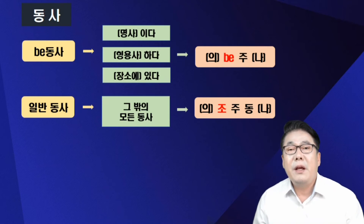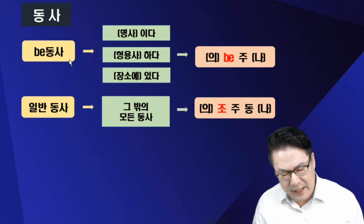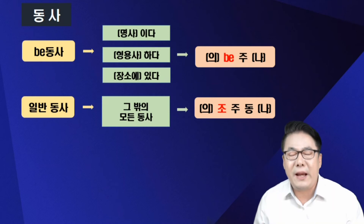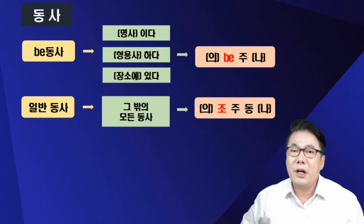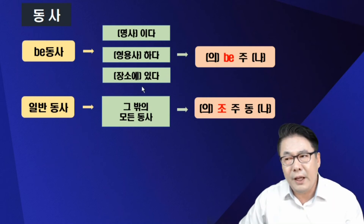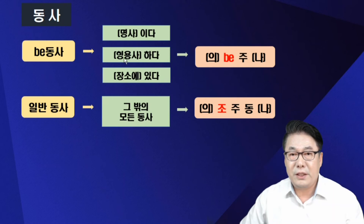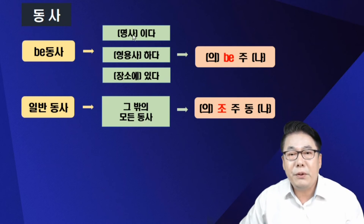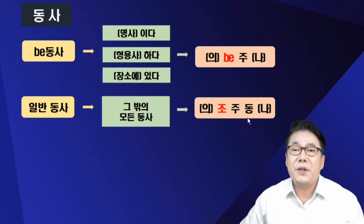이게 수학으로 치면 영어 사칙연산의 첫 번째 더하기에 해당하는 겁니다. 우리는 수학으로 치면 더하기, 즉 비동사·일반 동사를 구별하는 걸 안 했던 겁니다. 수학에서 더하기를 안 하면 그 다음 순서가 없죠. 빼기도 안 하게 되고, 구구단도 안 됐던 거죠. 가장 중요한 첫 단추를 안 했던 게 대한민국 영어입니다. 우리말 문장 속에서 비동사인지 일반 동사인지 구별하는 게 첫 번째입니다.